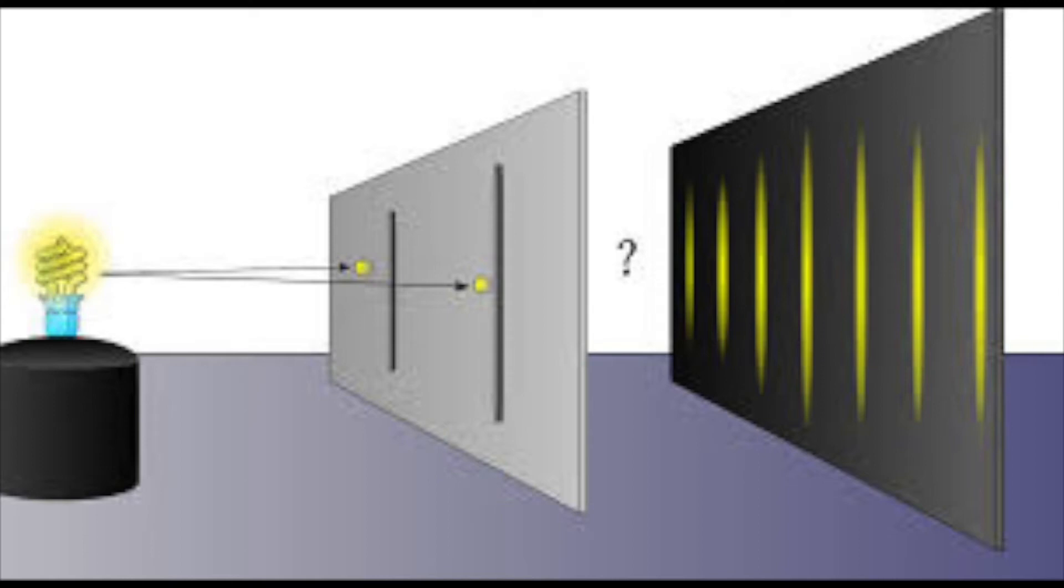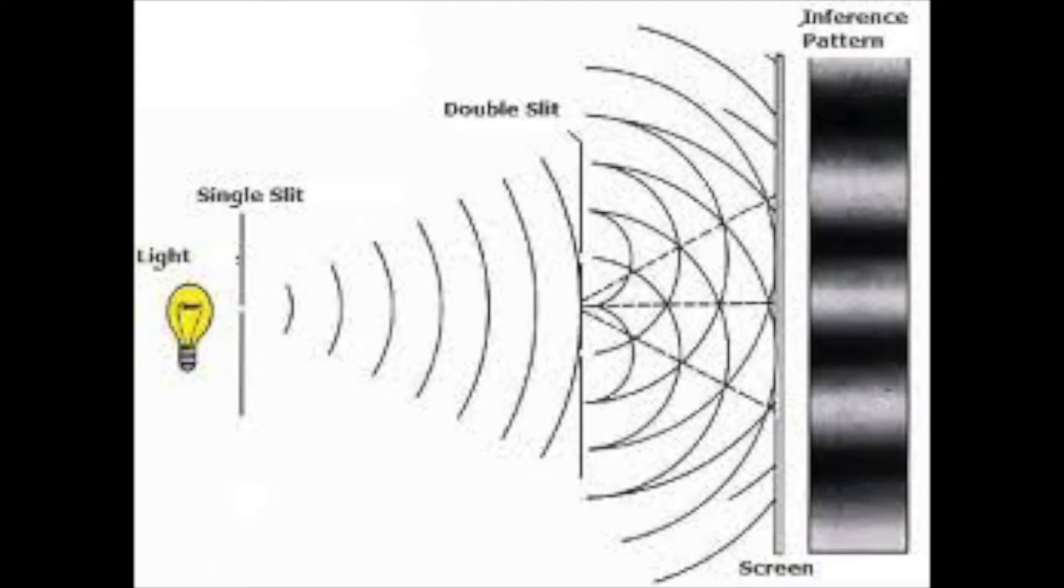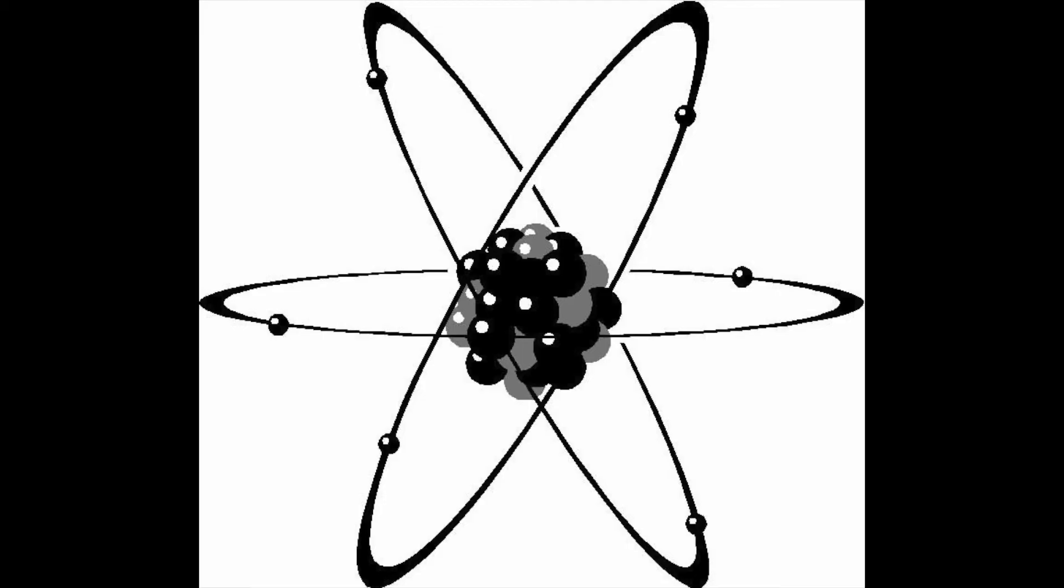The double slit experiment indicates that energy was moving in waves. But the current narrative on energy is that it is made up of particles. So which is it? Particles or waves?